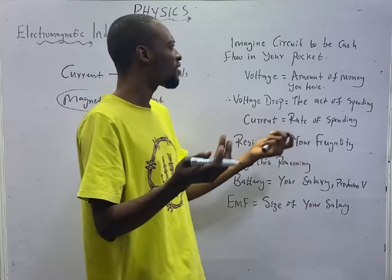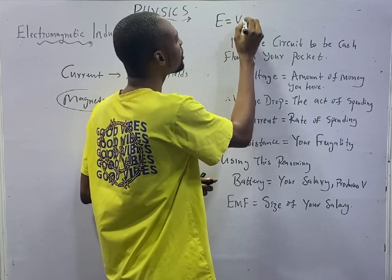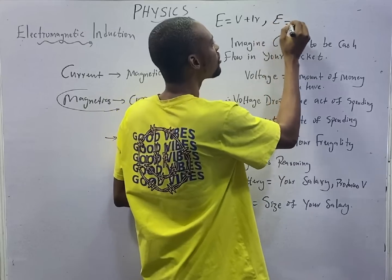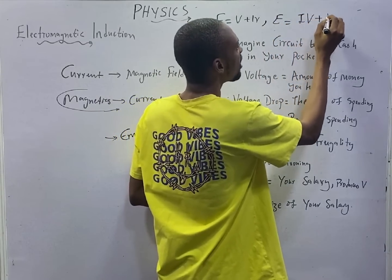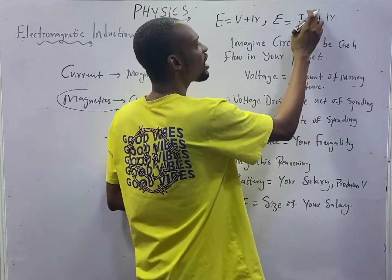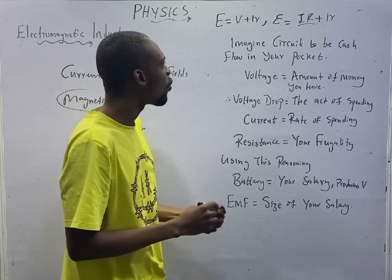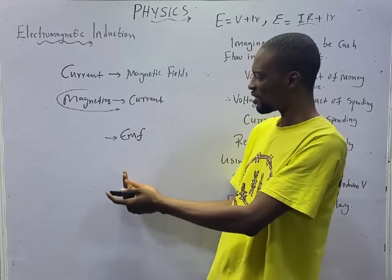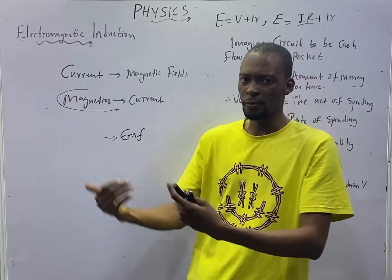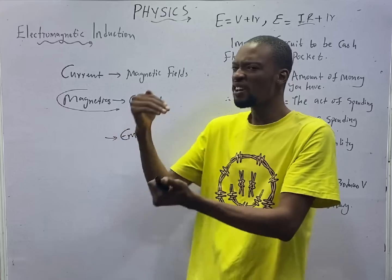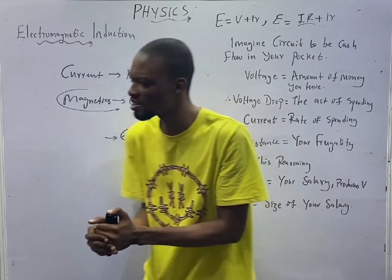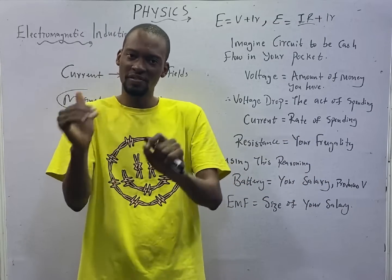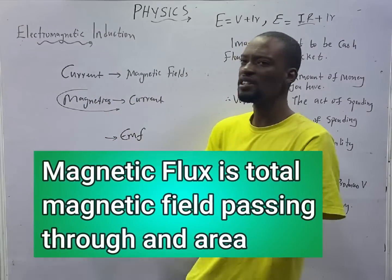The relationship between EMF and voltage is: E equals V plus IR₀, where IR₀ is the internal resistance. This can also be written as E equals IR (external resistance) plus IR₀ (internal resistance). Anytime there is relative motion between the conductor and the magnetic field, EMF is induced. The magnetic field is varying, and a varying magnetic field will produce a varying current — so the current produced in this process is referred to as induced current.